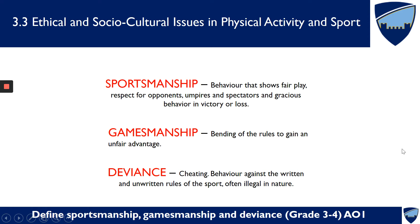Deviance is also known as cheating — behaviour against the written and unwritten rules of sport, often illegal in nature. Examples of deviance include performance enhancing drugs, which we'll look at in a separate lesson, and violence, where somebody is so desperate to win that they resort to violent actions. Because performance enhancing drugs is a large topic, it will be covered as a dedicated separate lesson.